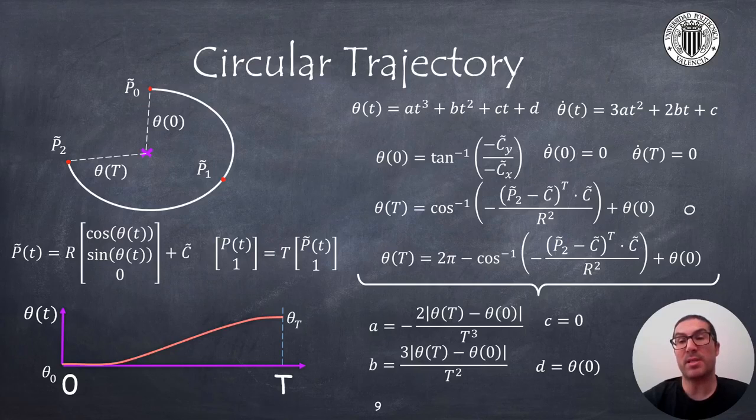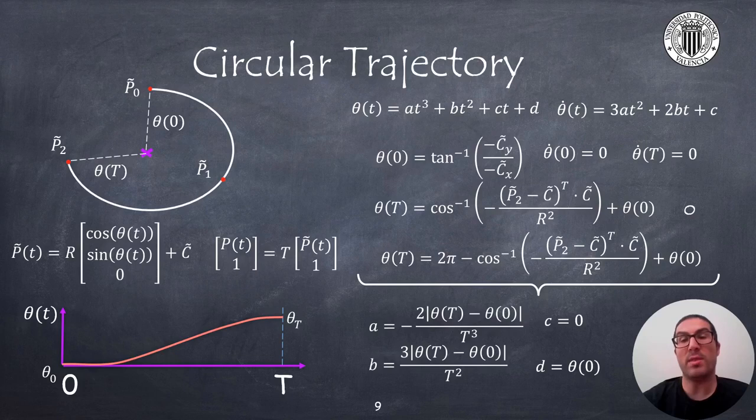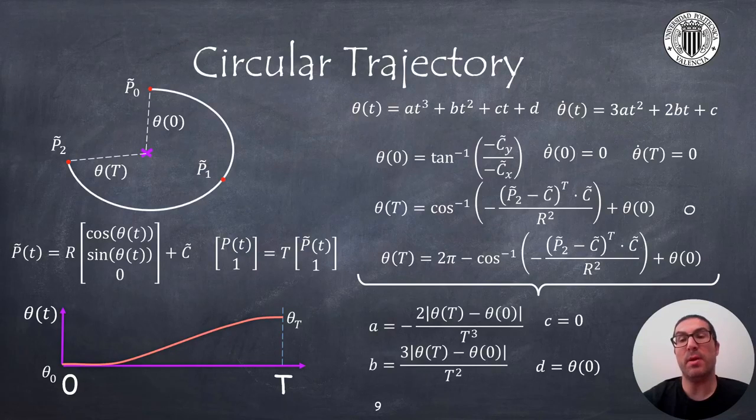The angle theta can be expressed, again, as a cubic trajectory over time, with boundary conditions as indicated here, which leads to parameters a, b, c and d as indicated in the formulas.